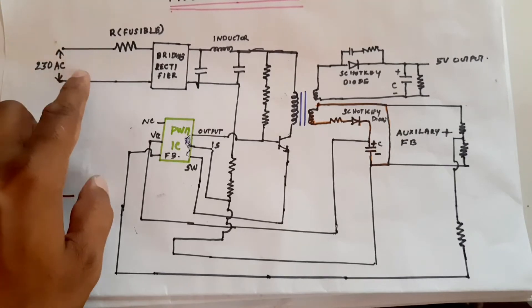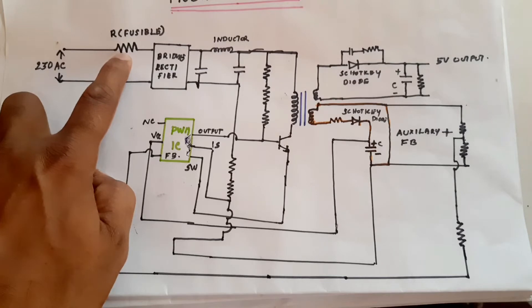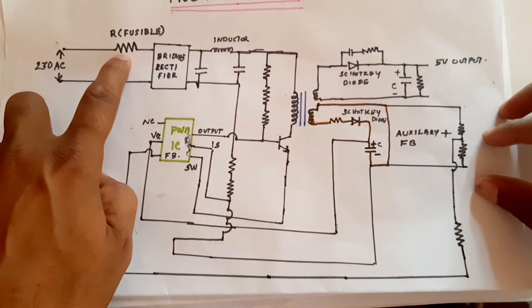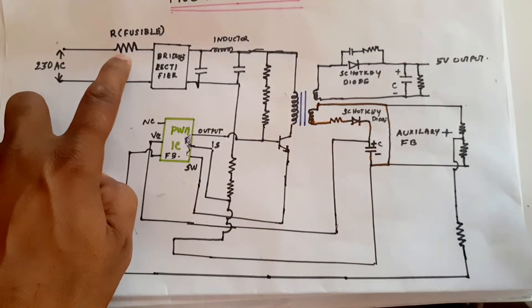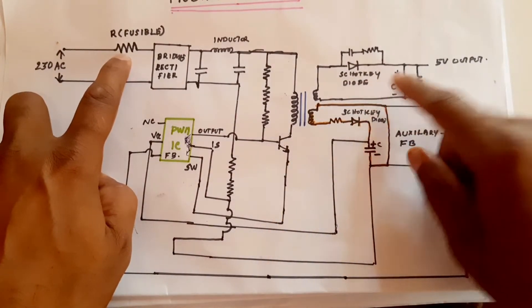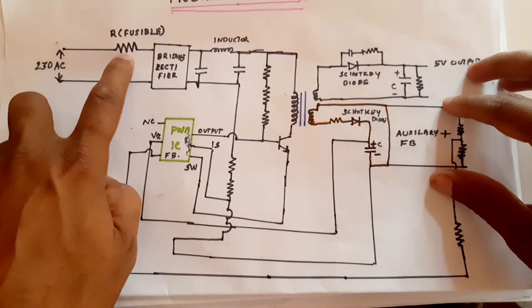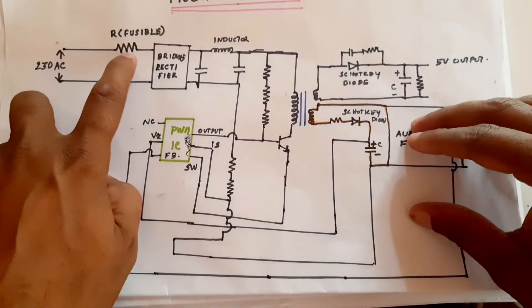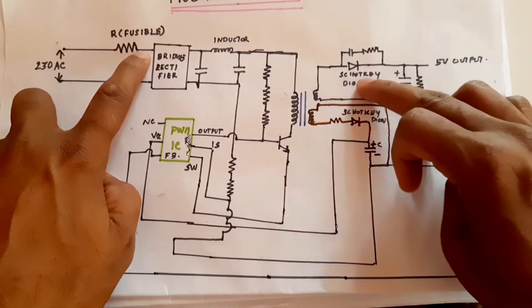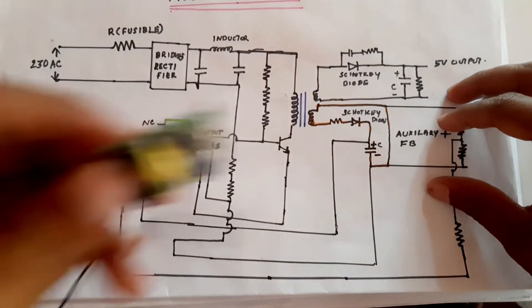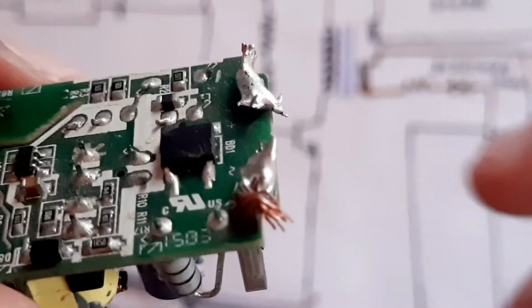This is the point where we apply the 230 volt AC, and it is directly connected to a fusible resistor. The function of the fusible resistor is to limit the current. If over-current flows in the circuit, the fusible resistor will burn out and protect the other components from getting damaged. For example, if the fusible resistor has a 1 ampere current limit, then if more than 1 ampere flows through it, it will burn out.